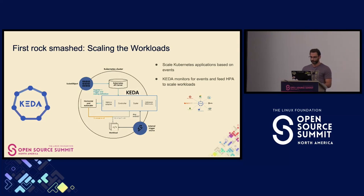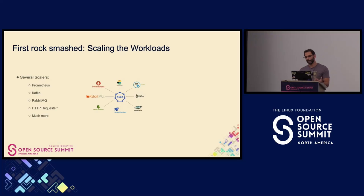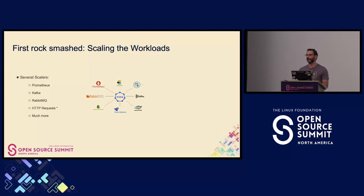With KEDA, it will work in tandem with HPA and will scale those pods in kind of seconds. We have a new entity called a scaler, which is basically the kind of event that we want to react on. For example, we have a scaler for RabbitMQ, we have a scaler for Prometheus, we can scale pods based on different Prometheus metrics. We have Kafka, we have a lot of scalers.